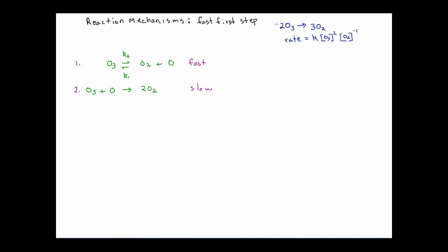Let's start first by talking about the experimental kinetics. Basically, in a situation like the one we have here, the experimental work has already been done on this particular chemical reaction. Shown up here in the bracket would be the overall balanced equation that shows the decomposition of ozone into molecular oxygen. The experimental rate law is here, where rate is equal to the rate constant times the square of the concentration of ozone times the concentration of O2 raised to the minus 1, which in itself is an interesting kind of rate law.